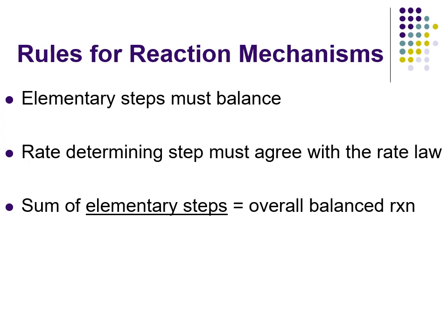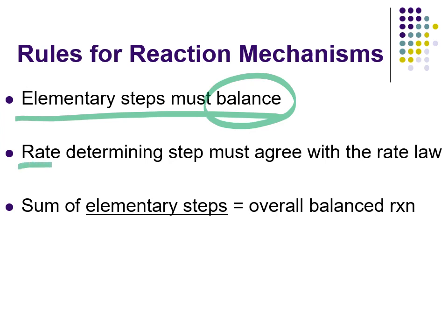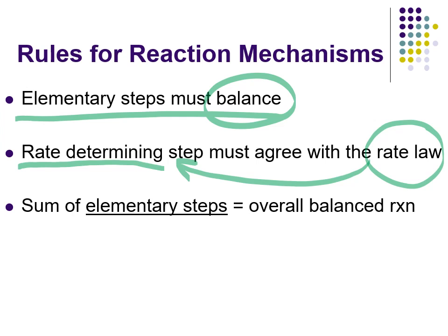The three rules are: first, no breaking the law of conservation of mass — each step has to balance. You can't create or destroy particles; every elementary reaction must balance. Second, the rate-determining step must agree with the rate law — the exponents tell us the rate-determining step. Third, the steps must add up together to give the overall balanced reaction. As long as you follow these three rules, your mechanism could be possible.